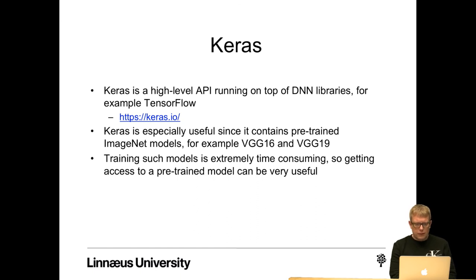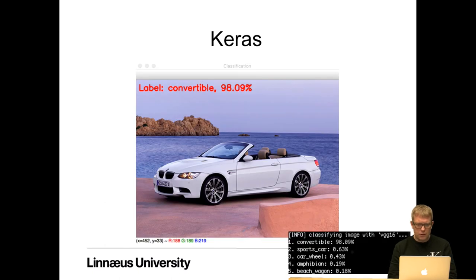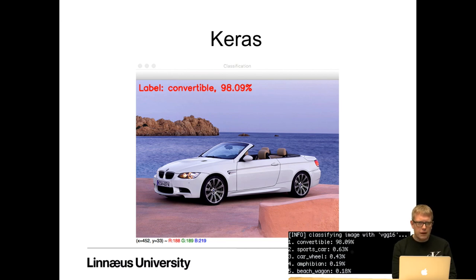An interesting library is Keras — a high-level API running on top of different deep neural network libraries, for example TensorFlow. You can download it from keras.io. Keras is especially useful since it contains pre-trained ImageNet models, for example VGG16 and VGG19. Training such models is extremely time-consuming, so getting access to a pre-trained model can be very useful. I downloaded it and tested it; the first image example was a BMW convertible car, and the label was 98.09% probability that it was a convertible and 0.63% that it was a sports car — obviously a correct classification.